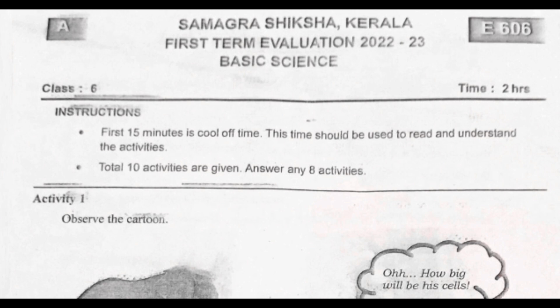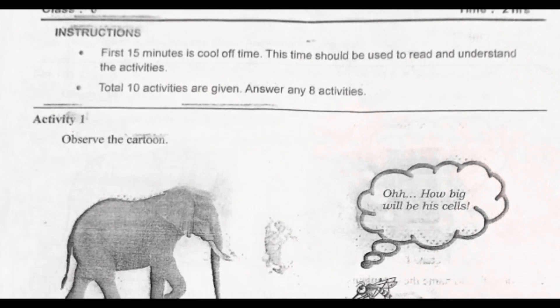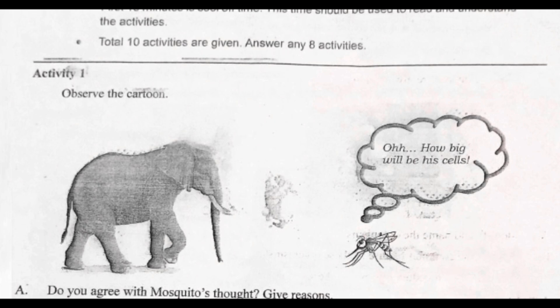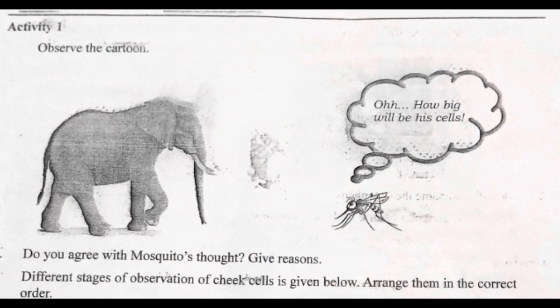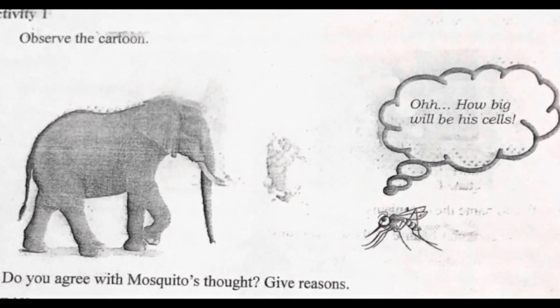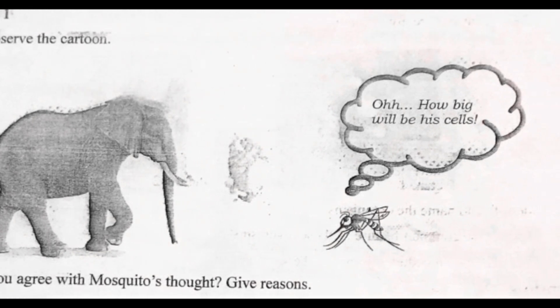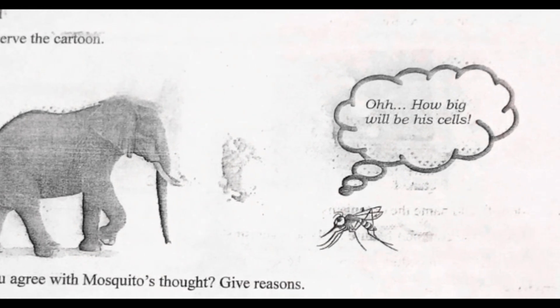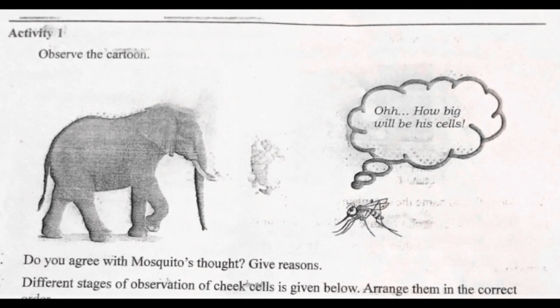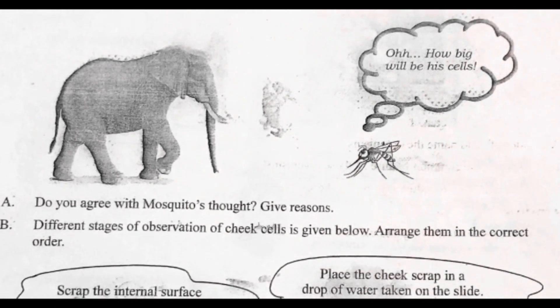Moving on to the first activity, Activity One: observe the cartoon. The cartoon shows an elephant and then a mosquito. The mosquito says, 'How big will be his cells — and I am a mosquito.' So the first question: do you agree with the mosquito's thought? Give reasons.